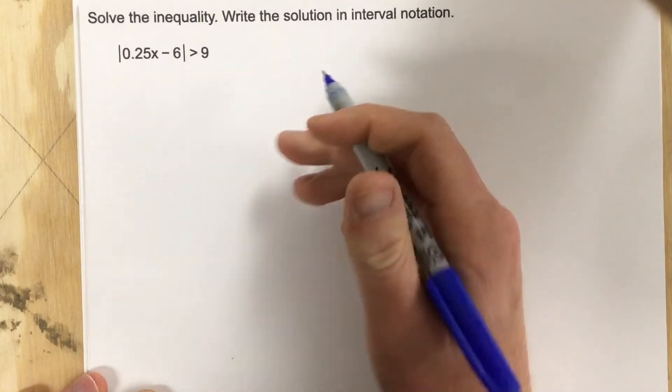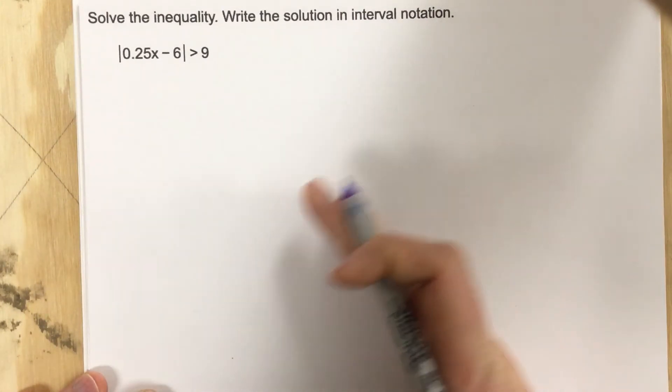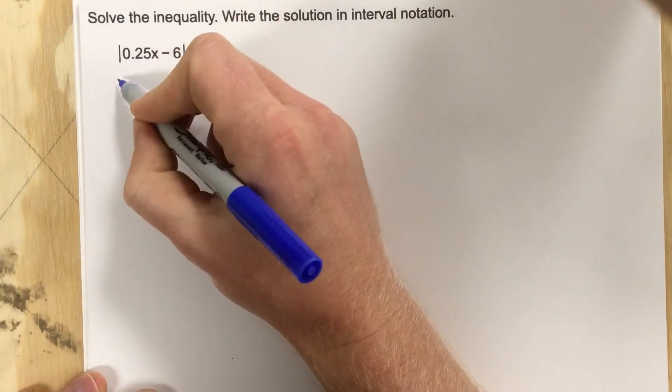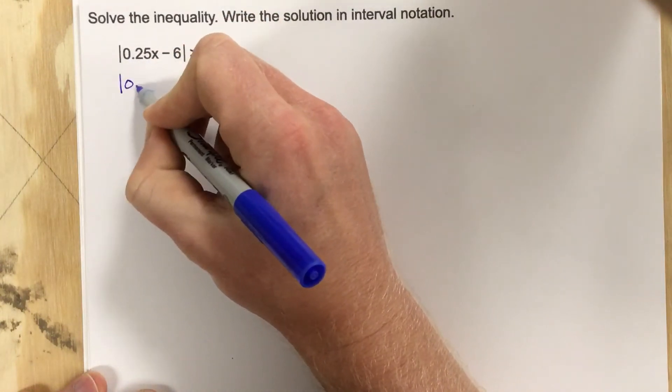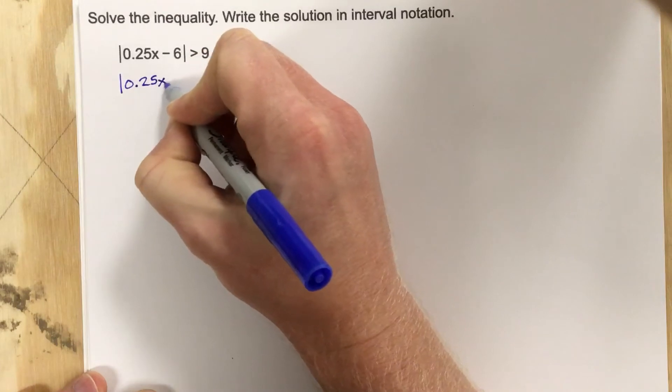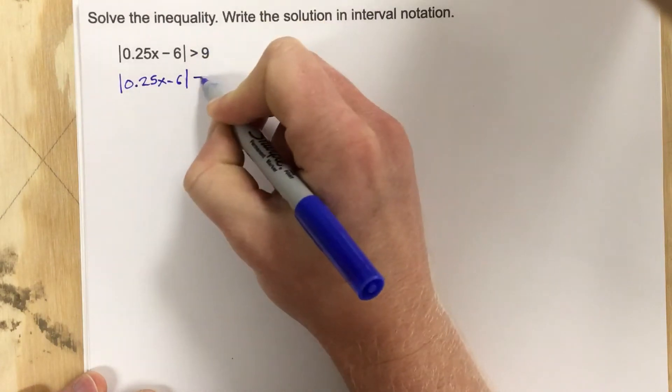Now there's other ways to solve it, and you can see that in some of my other videos, but this is my preferred method. So I'm going to say the absolute value of 0.25x minus 6 equals 9.